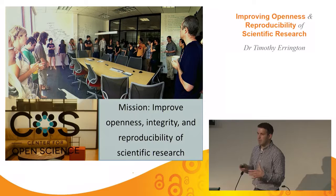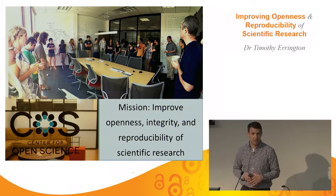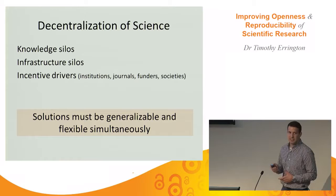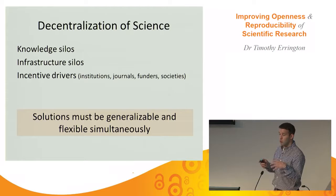At the Center for Open Science, we're looking to align those scientific values with our scientific practices, agnostic to discipline, because this isn't just cancer biology — many disciplines are struggling with this. It doesn't mean we're not doing a great job; it's about how we can improve and become more efficient. We also recognize that science is decentralized — there are knowledge silos, infrastructure silos, and different incentive drivers. Journals, funders, societies, and institutions all need to work in concert, but they operate independently from each other.